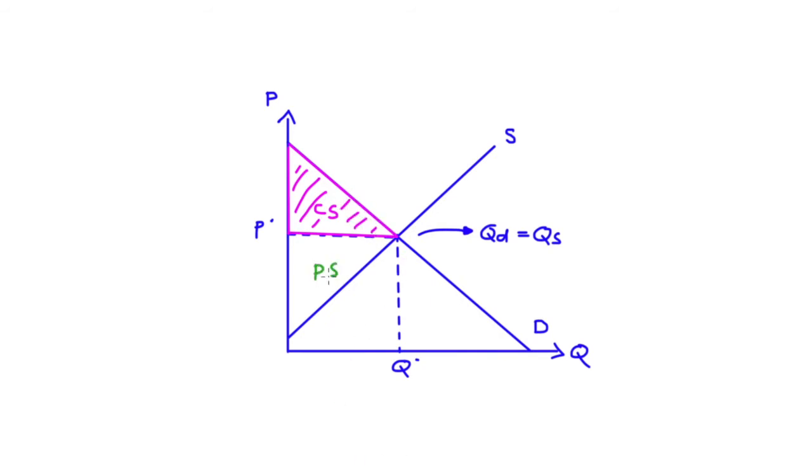Our producer surplus is going to be just that bottom triangle. And here we're going to think as we're trading up to Q star units, the price that the producers get per unit as they're selling their goods, the marginal cost, which is represented by the supply curve, is lower than the price that the producers are getting. So every time there's a gap between the supply curve and the price, or when the supply curve is beneath the price, then that counts as producer surplus.